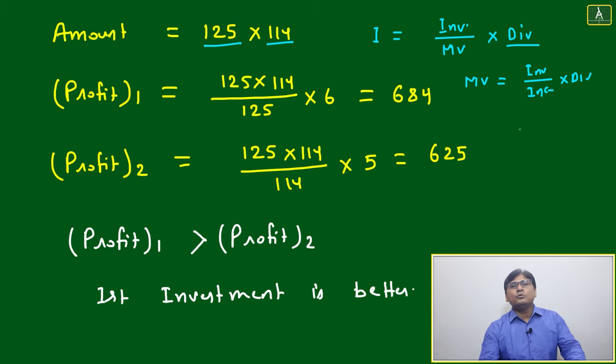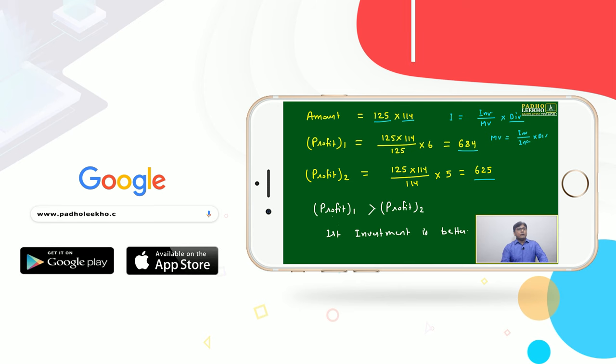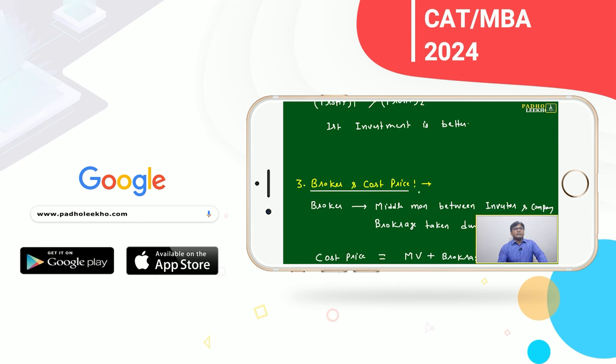125 into 114 divided by 125 into 6, you are getting 684 rupees. In second you are getting only 625 rupees. Profit one or income one is greater than income two, means first investment is better.